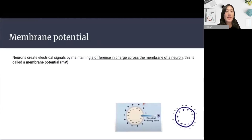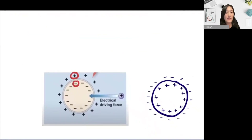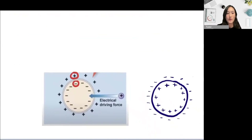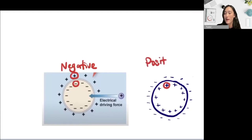The membrane potential is the difference in electrical charge across the membrane of a neuron. On the left-hand side, we can see that there are more negative ions inside the neuron and more positive ions outside. As the membrane potential is always the charge of the inside of the membrane relative to the outside, in this case it would be a negative membrane potential.